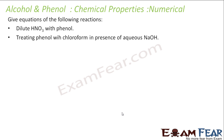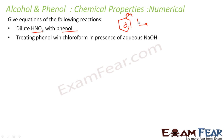The next reaction is dilute nitric acid with phenol, which undergoes nitration. The para-nitrophenol is the major product and ortho-nitrophenol is the minor product.